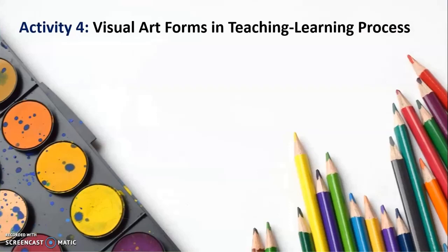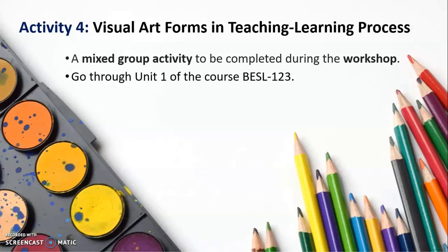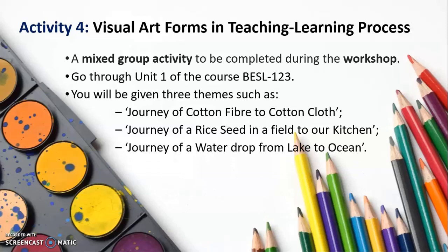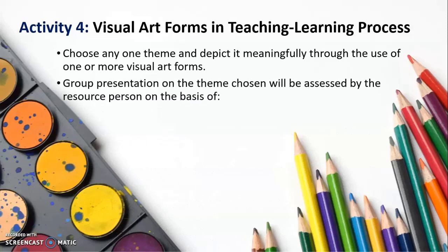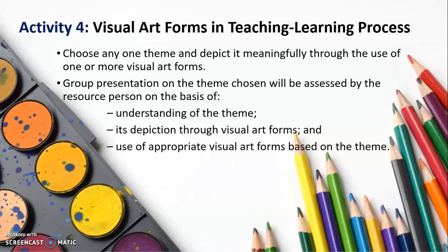The fourth activity is visual art forms in the teaching-learning process. This is again a mixed group activity which will be completed during your workshop. Please go through unit one of course BESL123. You will be given themes such as: journey of cotton fibers to cotton cloth; journey of a rice seed from the field to our kitchen; journey of a water drop from a lake to the ocean; or any similar theme identified by your resource person. Your group will choose one theme and depict it meaningfully through one or more visual art forms. The group presentation will be assessed on understanding of the theme, the depiction through visual art forms, and whether the use of visual art forms is appropriate.